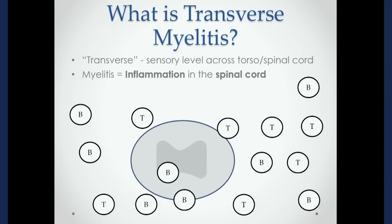We all have normal white blood cells that fight infections, but they can go awry. You can have good inflammation and bad inflammation. You can have abnormal cells that have gone wrong, and there are proteins and substances called antibodies and cytokines and other things that also build up inflammation that can affect really any part of the body — but here, in this example, the spinal cord.